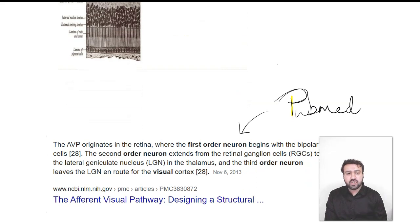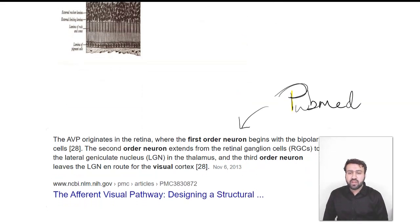Then even some articles on PubMed mention the same thing. Bipolar cells first order, ganglion cells second order, and lateral geniculate body third order neuron.